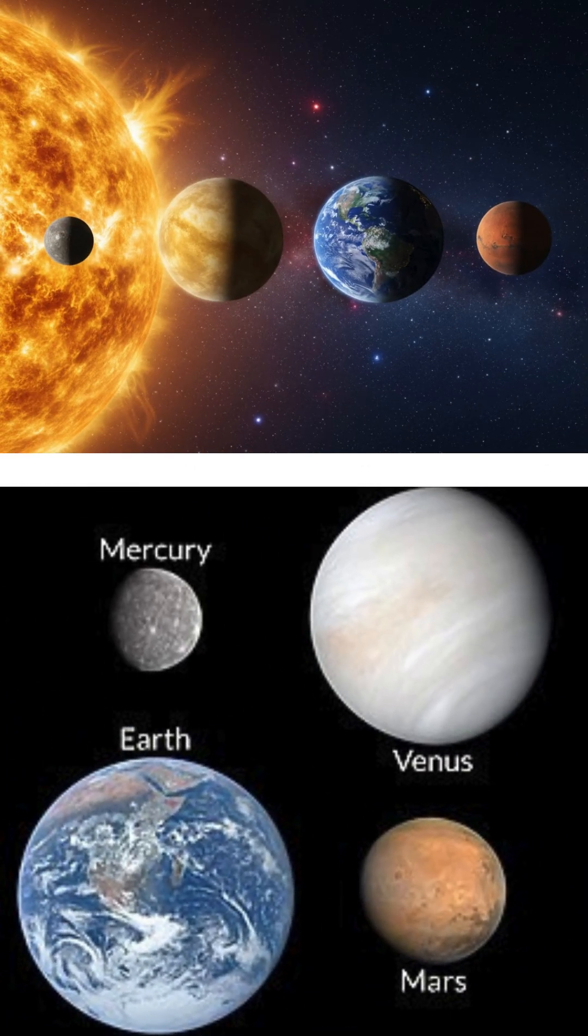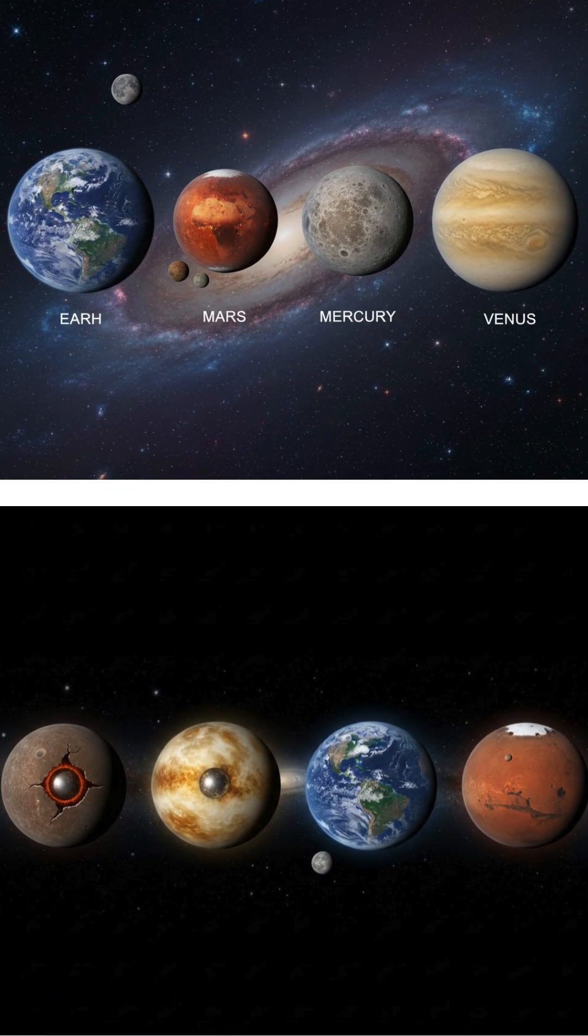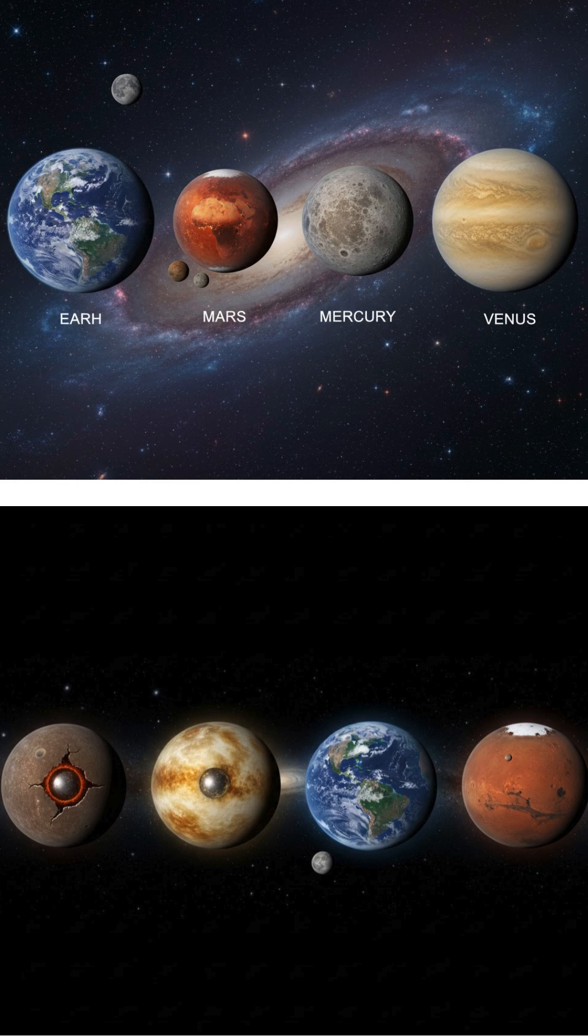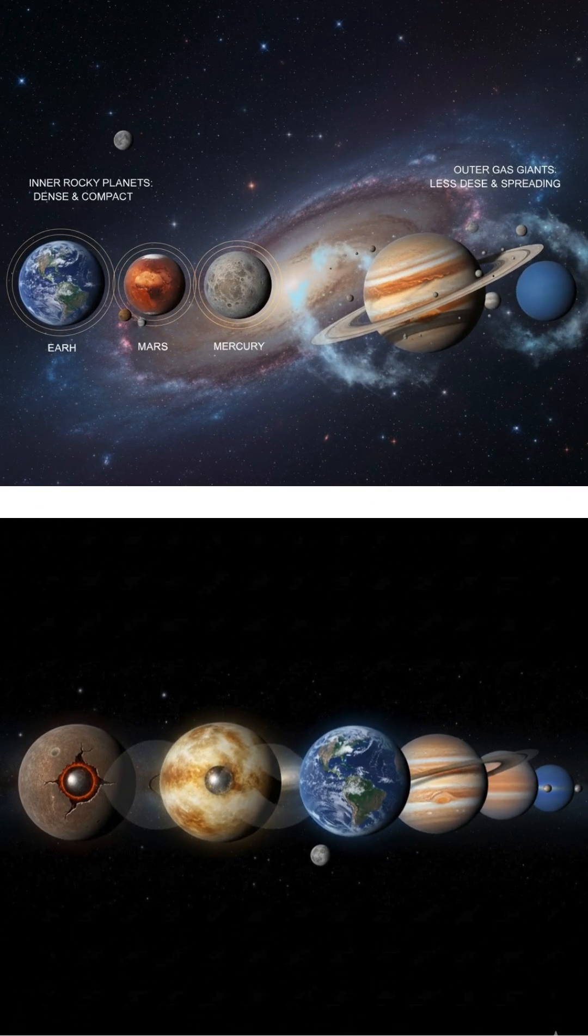Closest to the Sun are the four terrestrial, or rocky, planets: Mercury, Venus, Earth, and Mars. These worlds are characterized by their solid rocky surfaces, metallic cores, and relatively few moons. Earth has one, Mars has two, and Mercury and Venus have none. They are denser and more compact than the outer planets.